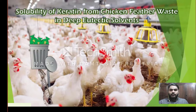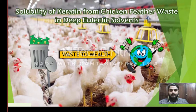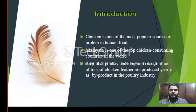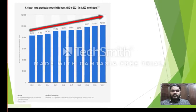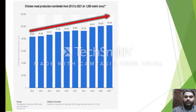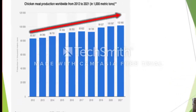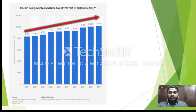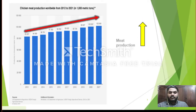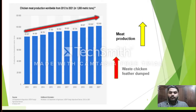The main idea of this topic is to convert waste into wealth. Chicken is one of the most popular sources of protein in human food, and Malaysia is one of the top chicken-consuming countries in the world. According to the National Agriculture Statistics Service 2015, consumption of chicken worldwide is roughly around 1500 metric tons. As we can see from the graphs, the production of chicken is gradually increasing from 2012, meaning that as meat production increases, dump waste chicken feathers also increase.